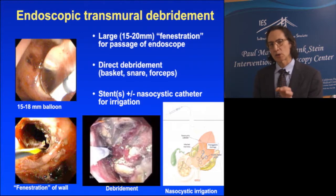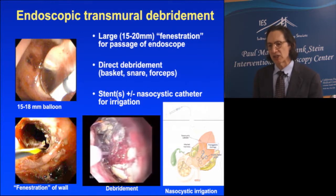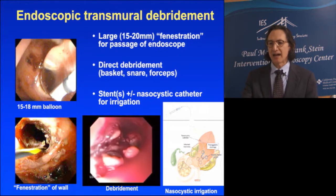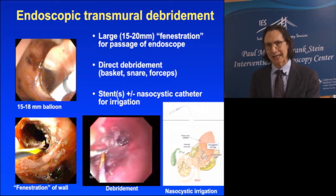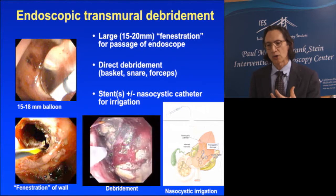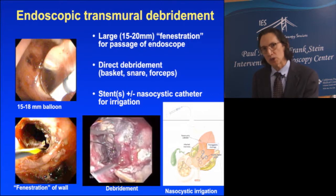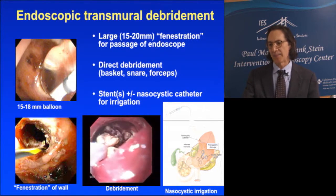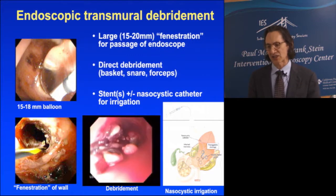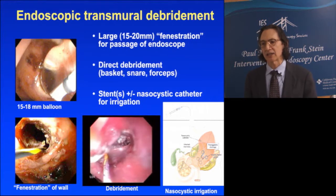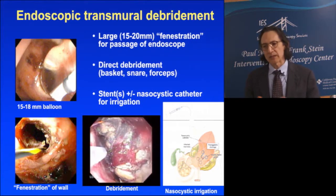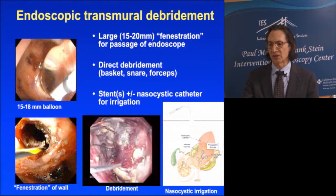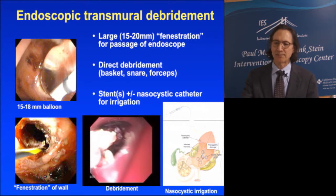Critical is creating a large opening — what I call fenestration. We typically use a 15 to 18 mm CRE balloon to create this opening, allowing passage of the endoscope into the cavity for debridement and a large opening for extrusion of necrosis. We can perform direct debridement using a basket, snares, or forceps. Optionally, we place a nasal cystic catheter for continuous irrigation — typically about a liter over 24 hours — with the catheter entering the cavity alongside pigtail stents.